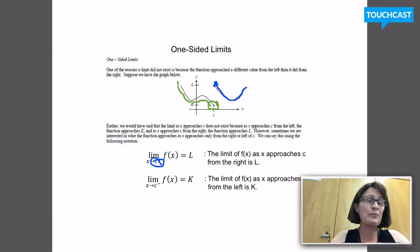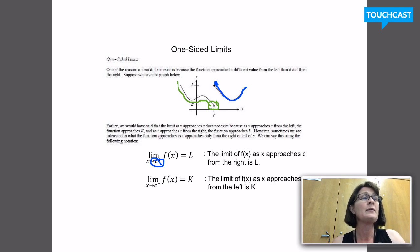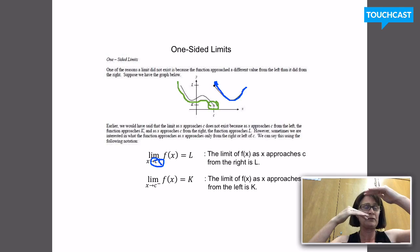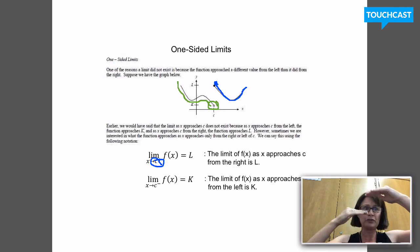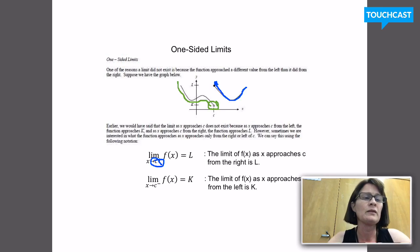And then we said here is our very first example of a function that does not have a limit that exists. There is no limit as x approaches c of this function. Because my limit from the left was k, my limit from the right was l. If you asked me what y value do I approach, I have two different answers. And if there are two different answers, there's no way to decide between them. So there's no limit — no answer to that question.